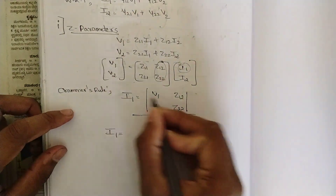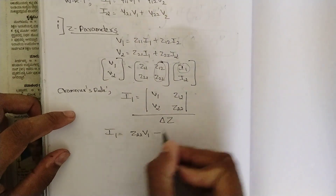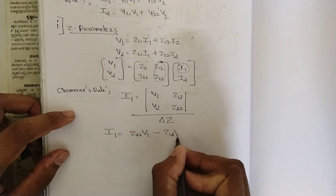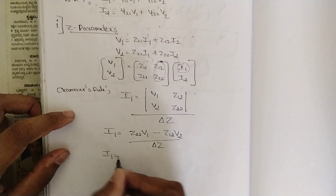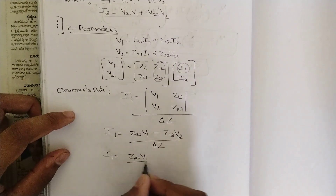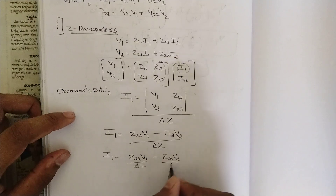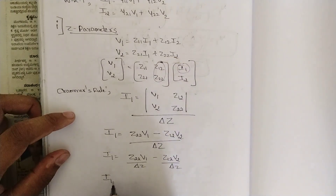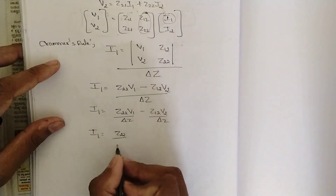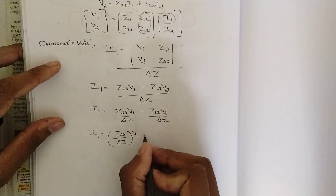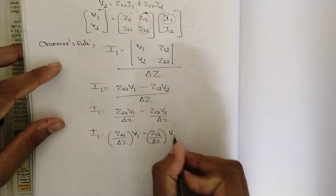I1 is equal to — solving the determinant by cross multiplication — Z22·V1 minus Z12·V2, all divided by delta Z. Split the terms: Z22·V1 divided by delta Z, minus Z12·V2 divided by delta Z. So I1 equals (Z22 / delta Z)·V1 minus (Z12 / delta Z)·V2.